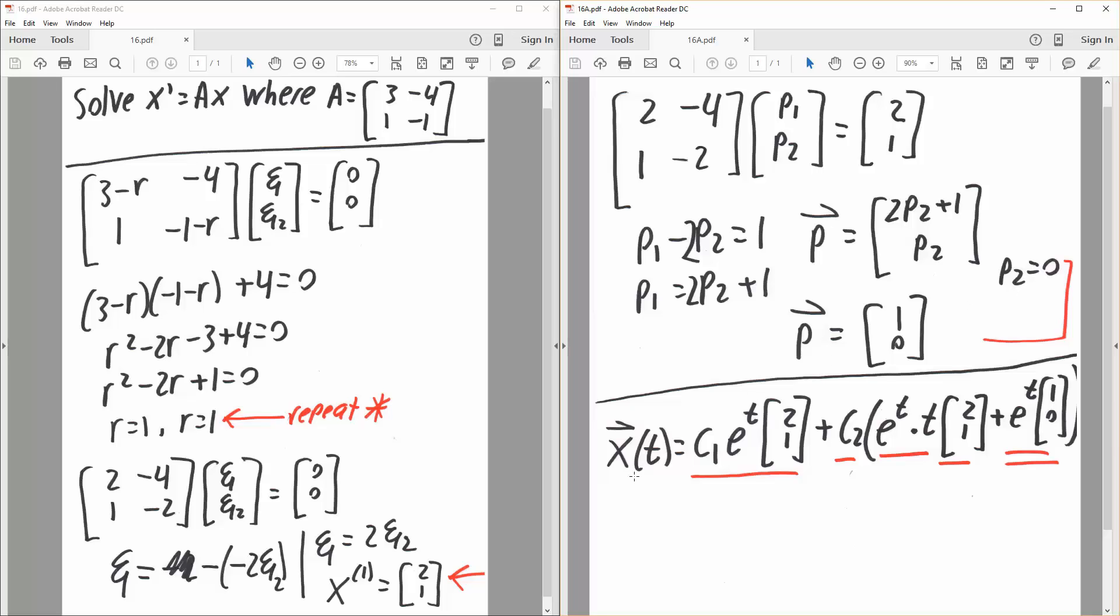And so our final answer for the general solution will be c1, e raised to t, because the eigenvalue was 1, so 1 times t, and the eigenvector was 2, 1. And since it repeats, we say plus c2, parentheses, e raised to t, the eigenvalue we said was 1, times t, because it repeats, and we say 2, 1, the eigenvector, 2, 1, plus